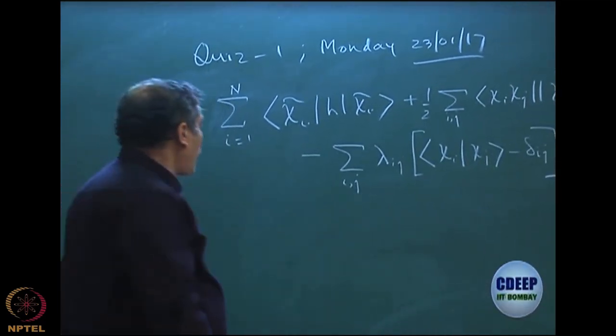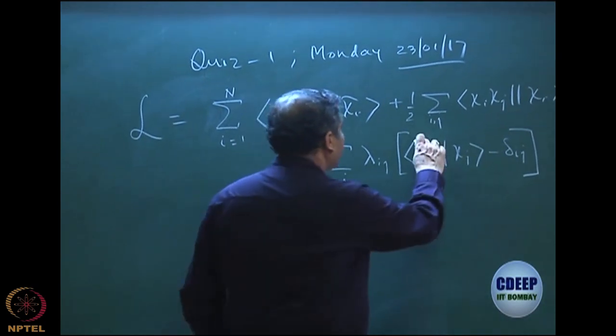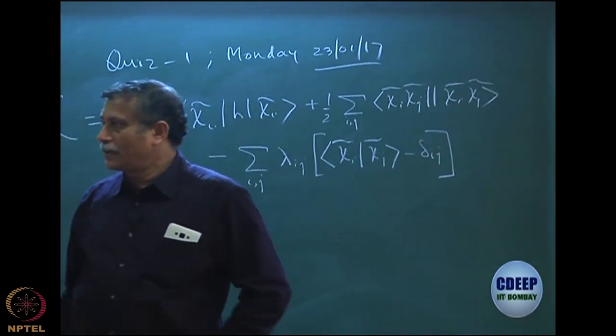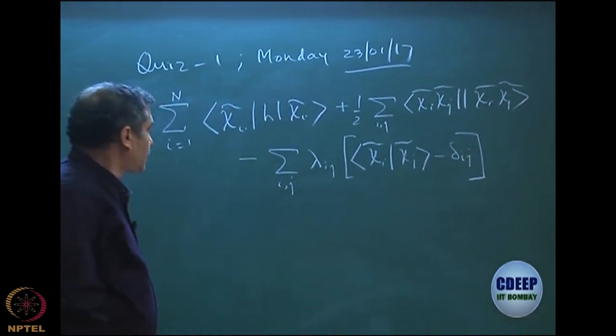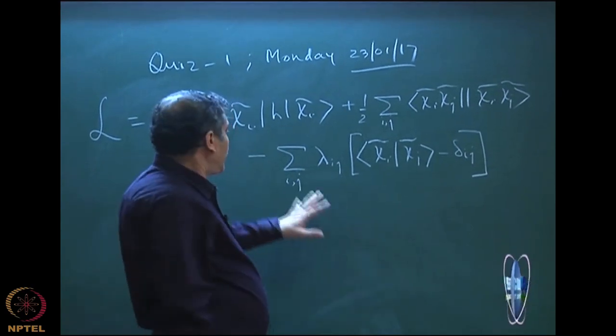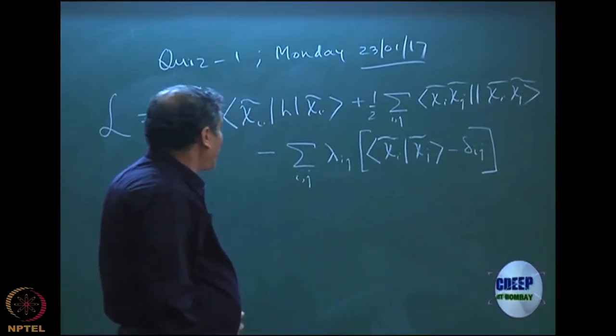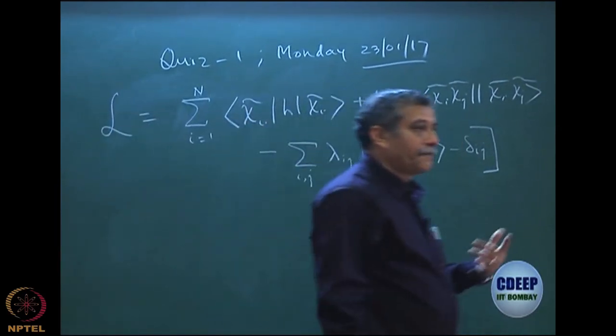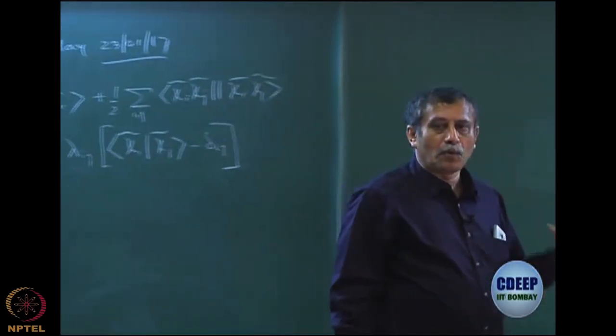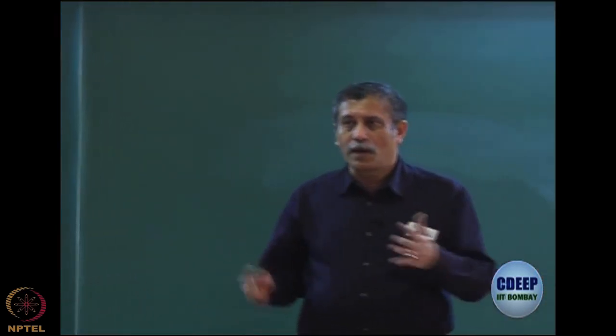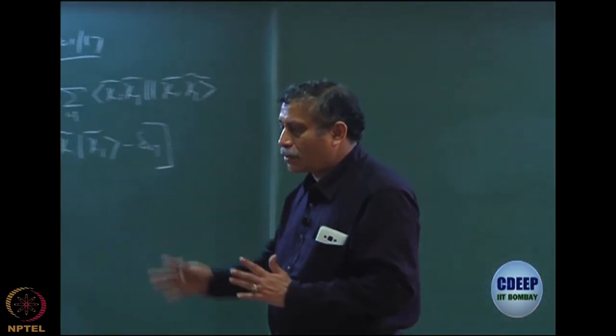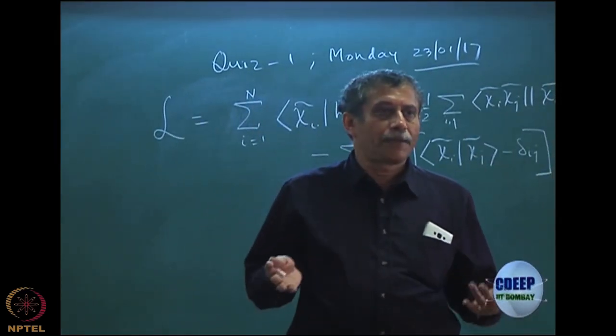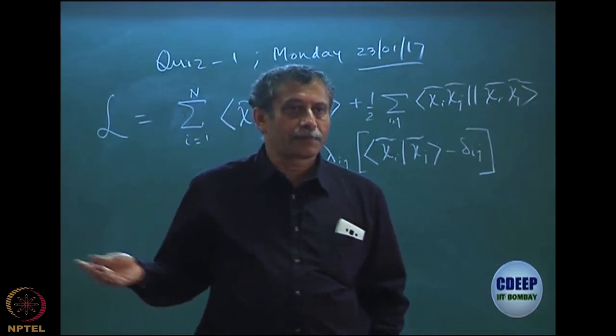We have n square set of equations. Just for correctness I should put tilde everywhere for the Lagrange multiplier. We have n square set of equations chi i tilde, chi j tilde is delta ij and we have the Lagrange multiplier for each of them. Lagrange multiplier idea is that for every condition you put one multiplier. If I have only one condition like f of x I want to optimize subject to g of x equals 0, then your Lagrangian L becomes simply f of x minus lambda times g of x because there is only one condition.